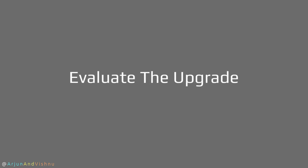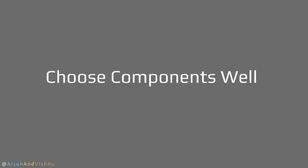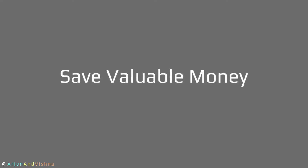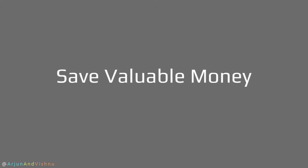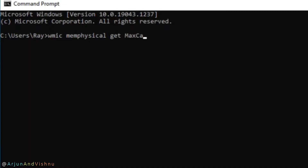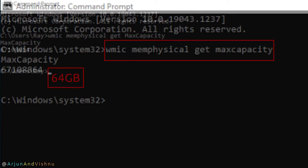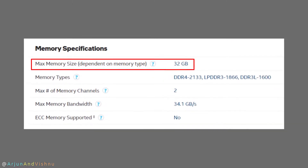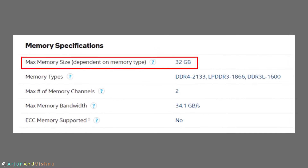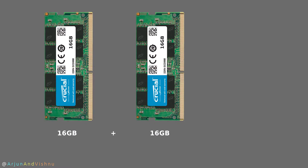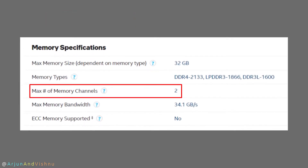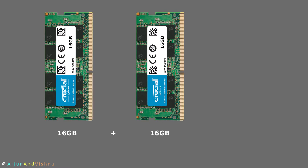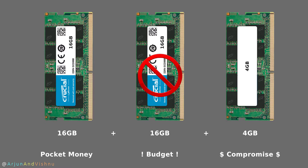Evaluation is always the first step in the upgrade process. We want to get it right so that there is enough headroom for high-end applications, the scope for further upgrade is left open, and the money for upgrade is spent well. Using a command, we found that the mini PC's motherboard supports up to 64 GB of RAM. But since the processor supports only 32 GB and the processor is soldered onto the motherboard, the maximum we can go up to is 32 GB. Two 16 GB RAMs is the ideal upgrade option. The processor has a dual channel memory feature, and using two RAMs instead of one will result in slightly higher memory bandwidth. We will add only one 16 GB for now to save cost and leave open the option of adding another 16 GB in future when applications demand more.